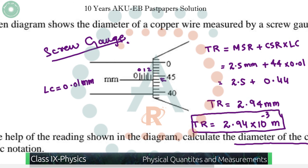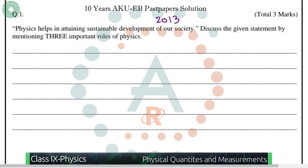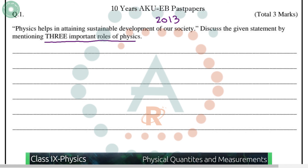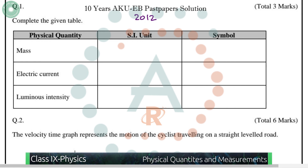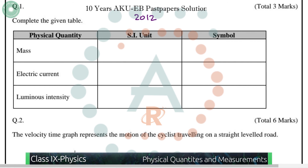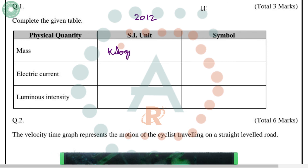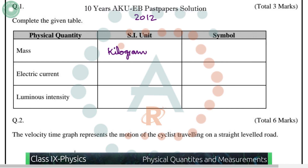In the 2013 paper, we once again have to write three important roles of physics in our daily life. Moving on to the 2012 question on physical quantities and measurements, we complete a table with physical quantities, their symbols, and SI units. Mass has symbol m and SI unit kilogram (kg).